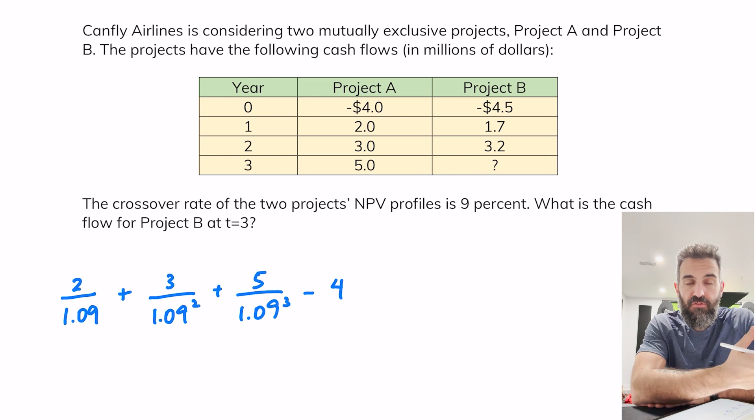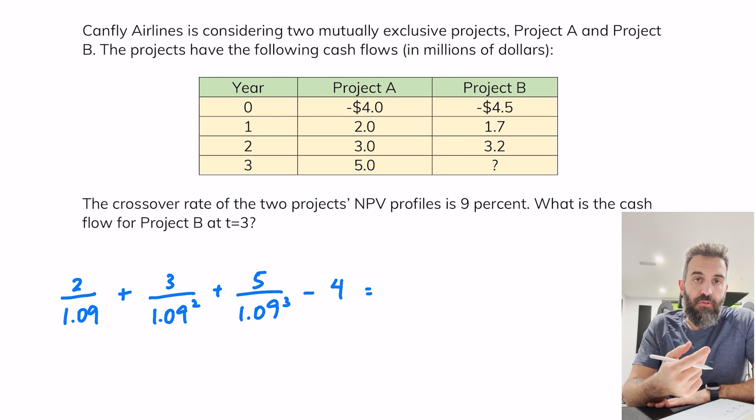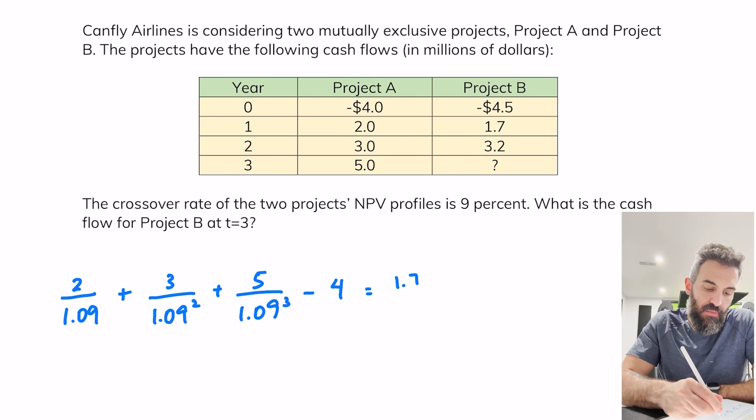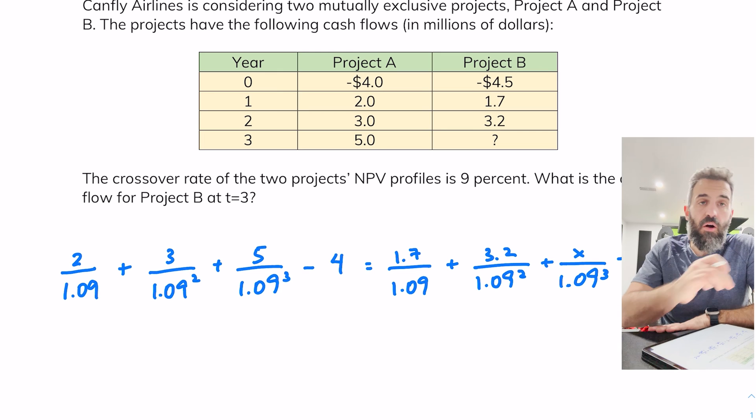And then I'm going to set that equal to the exact same thing for Project B. So the first cash flow for Project B is 1.7 discounted back one year, then 3.2 discounted back two years, then x which is the unknown discounted back three years, minus 4.5.